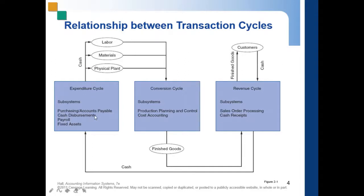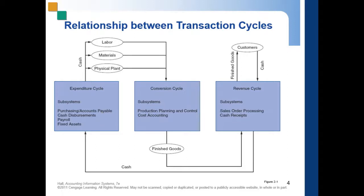Next is the cash disbursement system. When the obligation created in the accounts payable system is due for payment, the cash disbursement system authorizes payment, disburses the funds to the vendor, and records the transaction by reducing the cash and accounts payable accounts.